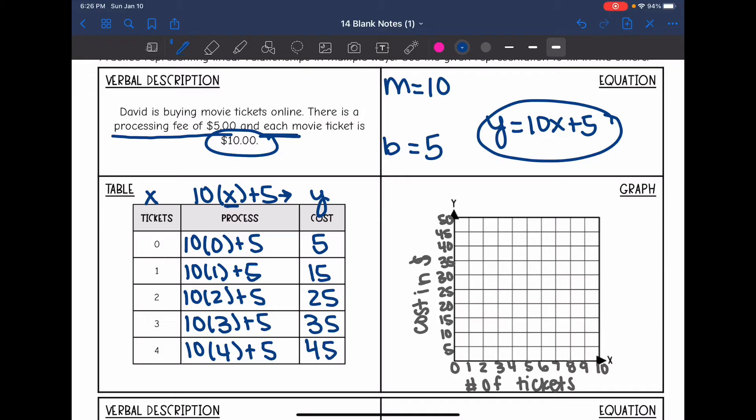All right, so I filled out my table and now I have 5 ordered pairs. This first ordered pair, 0 tickets cost $5. Next one, 1 ticket would cost $15. 2 tickets would cost $25, and 3 tickets would cost $35, and 4 tickets cost $45.